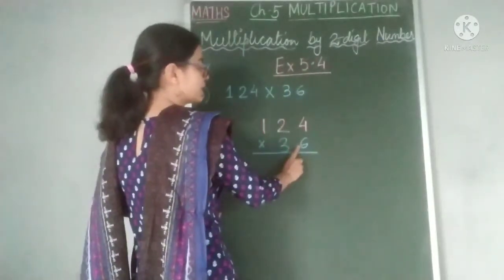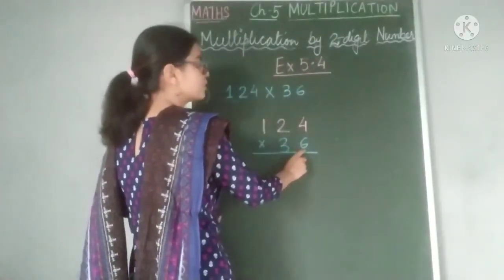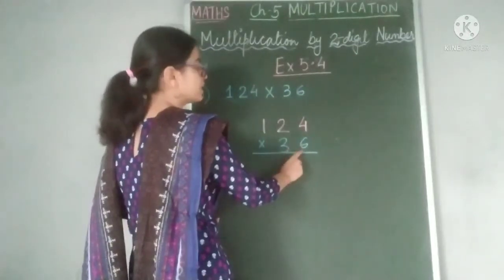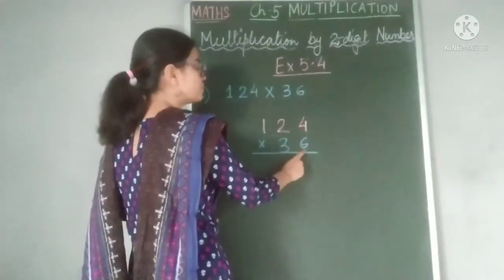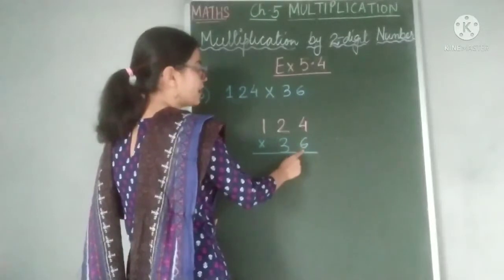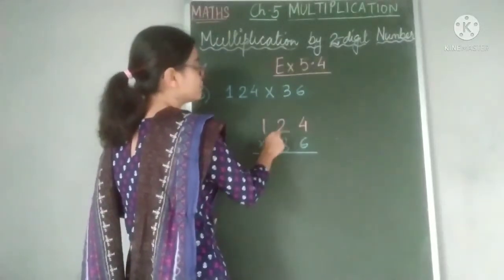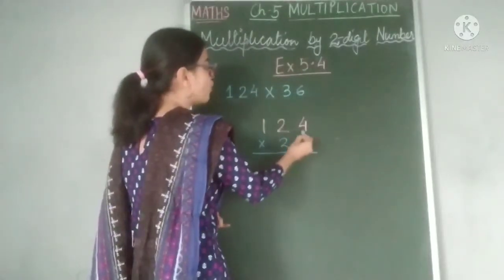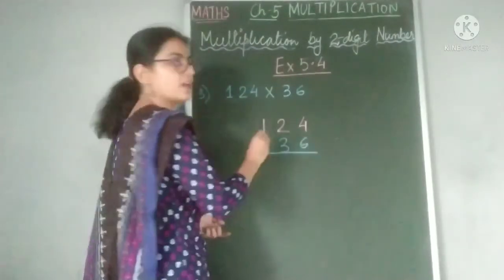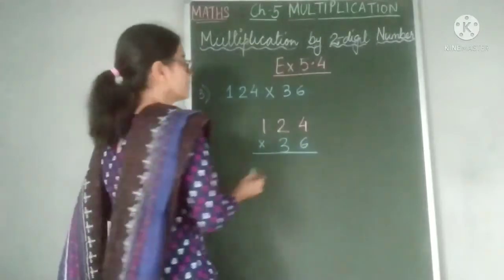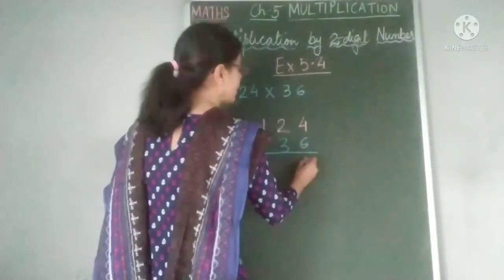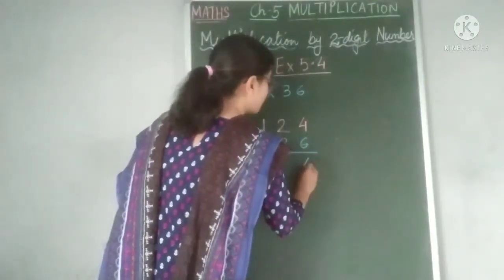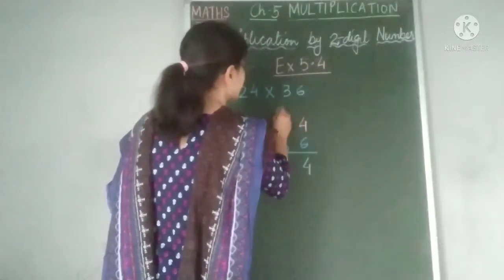We first start the multiplication by the ones place. From the multiplier we take the digit at the ones place and we will multiply all the digits of multiplicand by this digit. Here we have 6 times 4, we write 4 here and 2 is carried over.